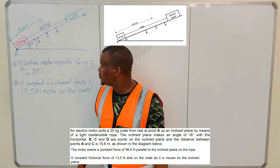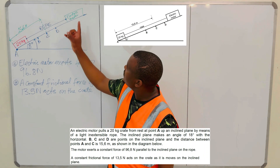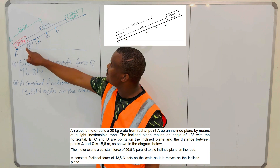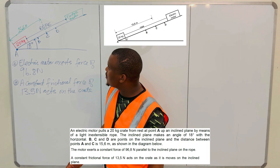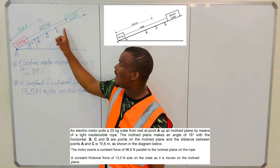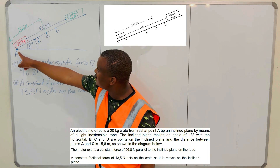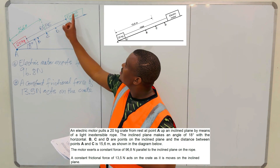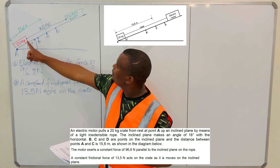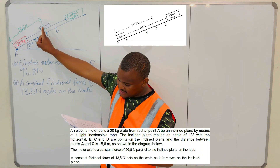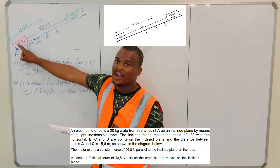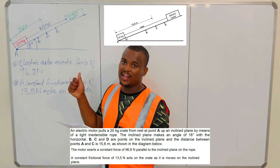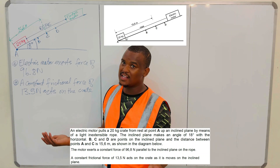So, they are saying you have this electric motor that is pulling this particular crate up the slope. This slope makes an angle of 18 degrees with the horizontal. You have points B, C, and D on this slope, and the distance between C and A is 15.6 meters. The magnitude of the force applied by the electric motor is 96.8 newtons, and the frictional force acting on the 20 kg block as it moves up the incline is 13.5 newtons.